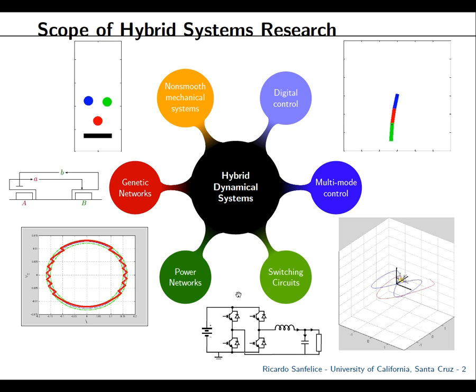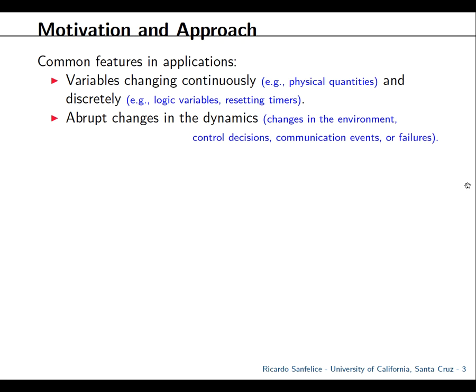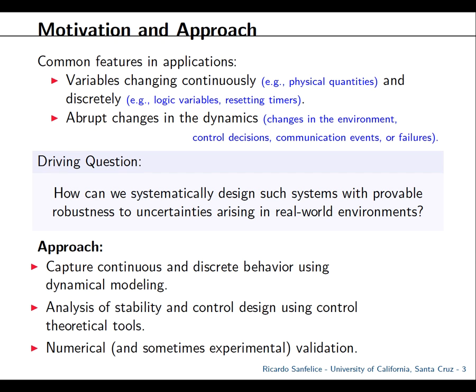Most of these systems from science and engineering have variables that change continuously, like the physics of links or the position of a vehicle, and also variables that change abruptly, like velocity at impact, which can be modeled as a jump. Or you can have changes in the environment or control decisions — maybe because there is a fault and the output disappears and you need a monitor to pick the right algorithm to cope with what you're measuring.